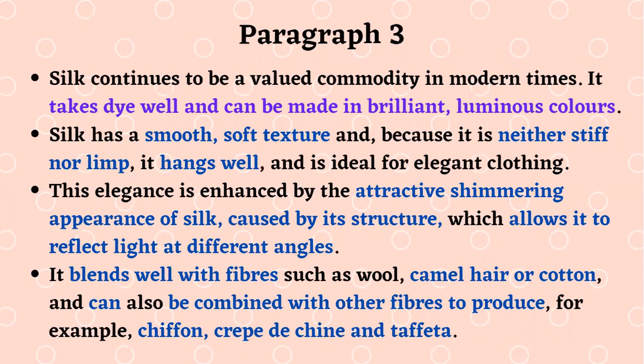Paragraph three marks a transition to modern times. Silk continues to be a valued commodity today. It takes dye well and can be made in brilliant, luminous colors. Silk has a smooth, soft texture and, because it is neither stiff nor limp, it hangs well and is ideal for elegant clothing. This elegance is enhanced by the attractive shimmering appearance of silk, caused by its structure which allows it to reflect light at different angles.